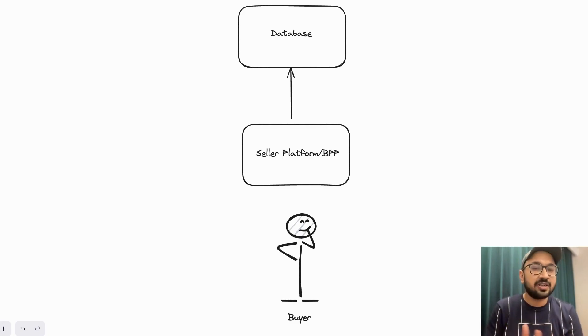As of now, registry only knows that BPP is a participant who is a seller. But does ONDC store the catalog or inventory in their system? If not, how does data magically appear for the buyers to consume given the buyer is not coming directly to the seller's platform but going to a different platform called BAP?